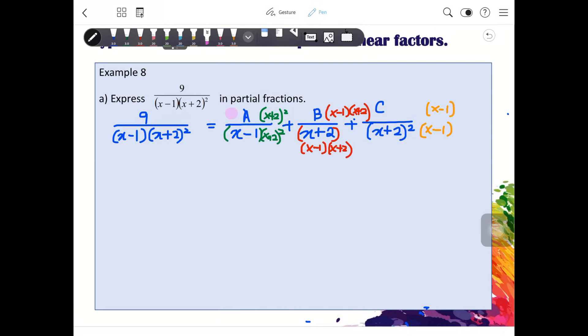So, if you read like this, you are going to have this, this, and this. I will write them all together. Remember, you have A, x plus 2 squared plus B, x minus 1, x plus 2 plus C, x minus 1 over the same denominator, x minus 1 and x plus 2 squared.